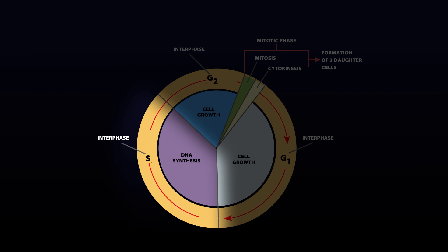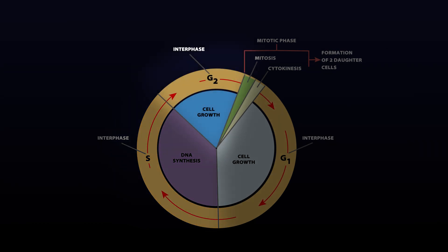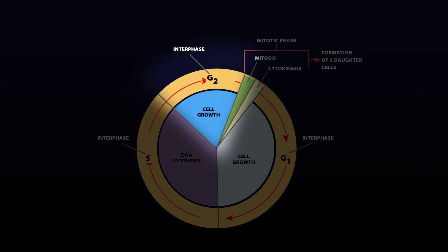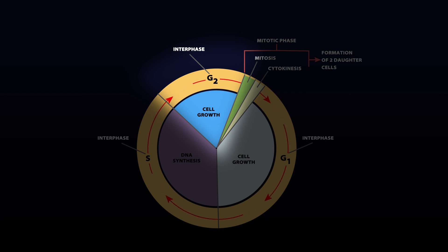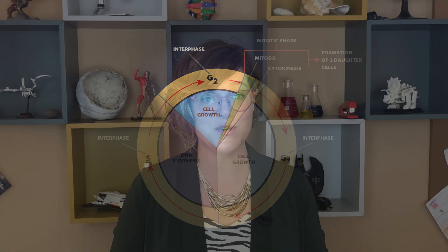Once the cell has that copy, it's able to move into the G2 phase. Here, the cell replenishes energy stores, duplicates the organelles, and makes the proteins needed to be able to move the chromosomes in the next phase, which is mitosis.